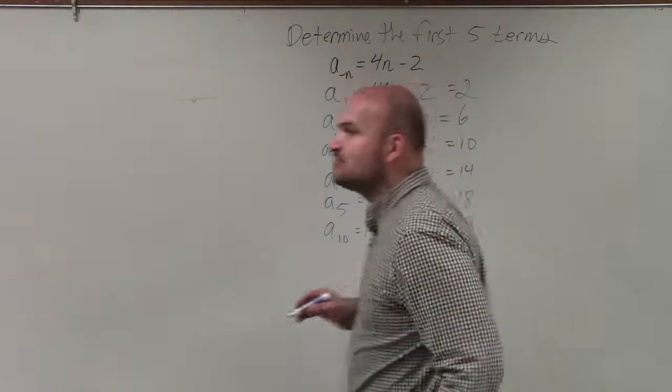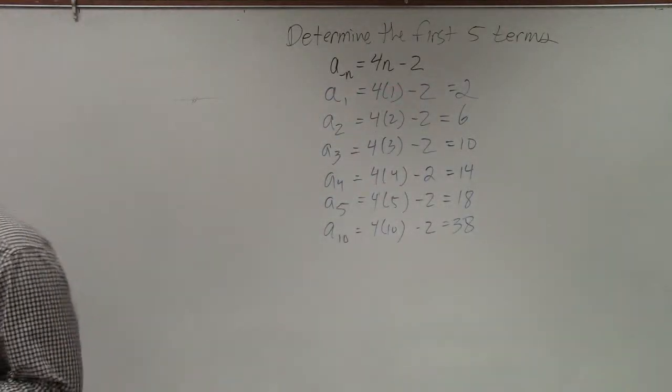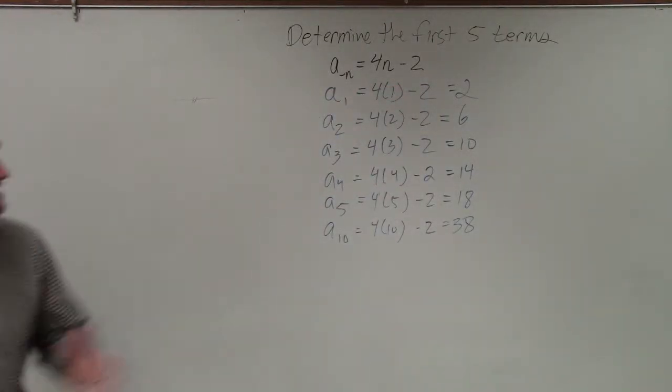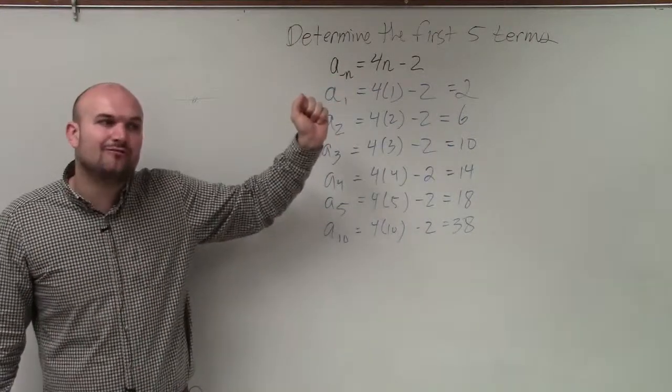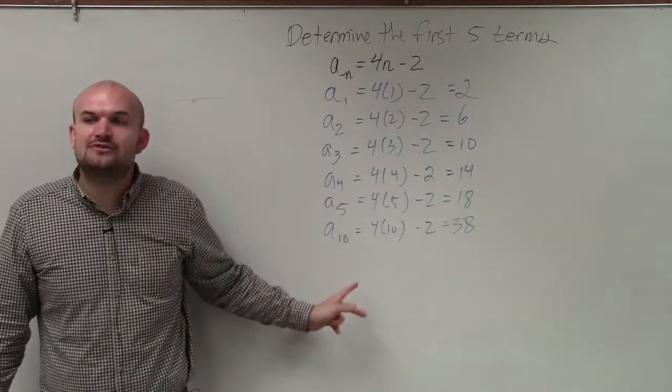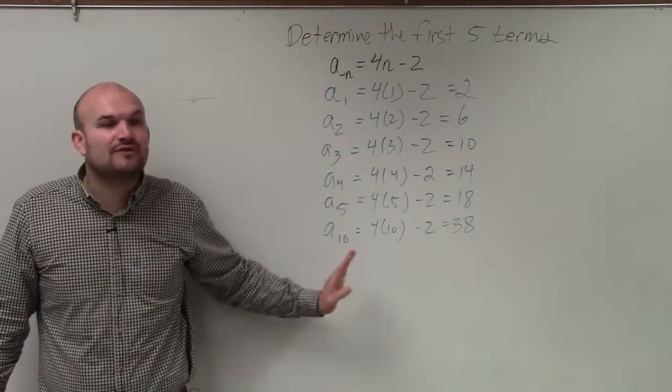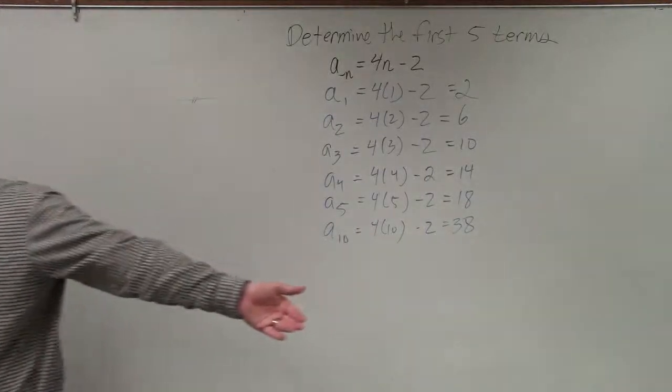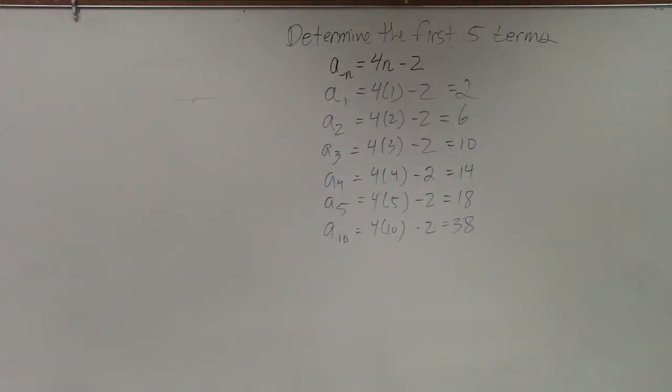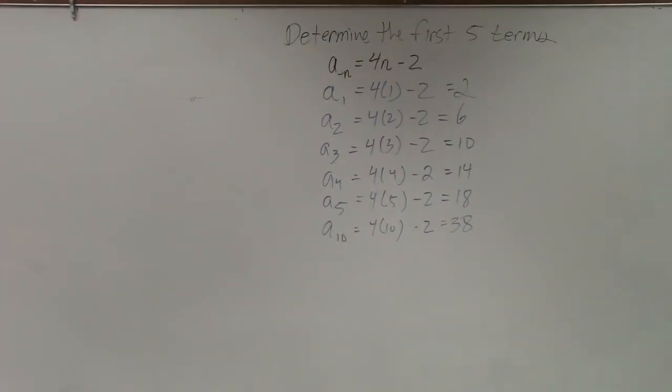So what the explicit formula allows you to do is, yes, you can find the first five terms. But what it's also very helpful for is finding the value for any number in your sequence by just plugging in what number that is of the sequence.